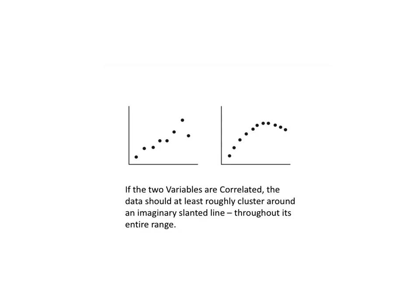Since correlation analysis is only about linear relationships, if the two variables are correlated, the data should at least roughly cluster about an imaginary slanted line throughout its entire range. That's important, throughout its entire range. If you don't see that clustering about the slanted line in the plot, it would be unwise to proceed with calculating a correlation coefficient.